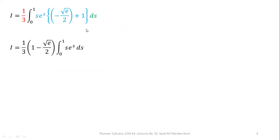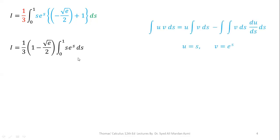Up to here, I have completed the process of integration with respect to the central variable. Now I am going to apply rules of integration with respect to the most outer variable, which is s. We have a product of two terms with respect to s: s times e raised to power s. To perform its integration, I have to use integration by parts again, using u = s and v = e raised to power s.